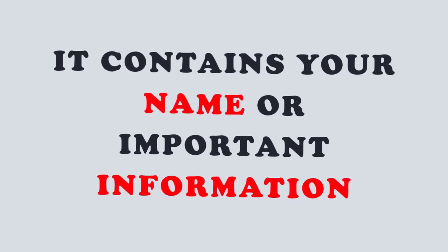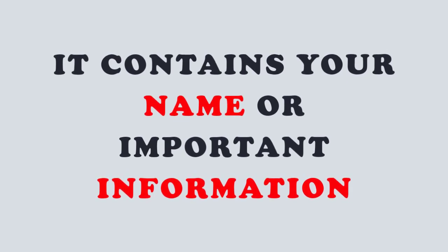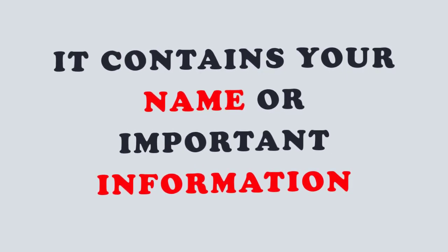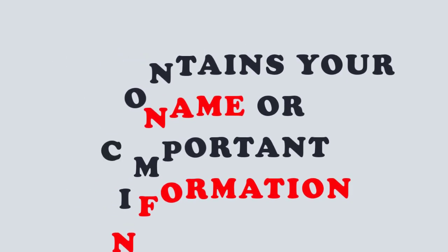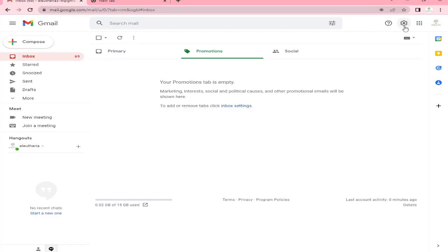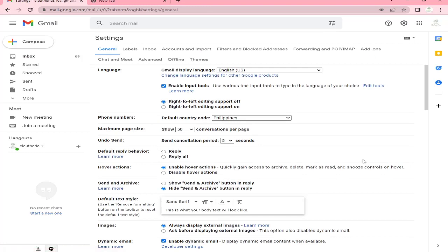In addition, when you are working in a company, putting a signature at the end of your email creates a recognition or sign that your email is for the people belonging to your company only. To set this up, open your email account and click on the gear-like icon found on the left side of the window, then click on 'See all settings.' Under the General tab, scroll down until you see the signature option.